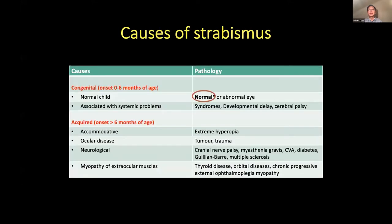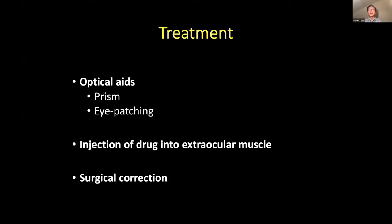The causes of strabismus can be divided into congenital — occurring in the first six months of age — and acquired — occurring after six months. In the majority of cases, the eye itself is normal. Treatment options include optical aids, prisms for small-angle strabismus, and patching of the eye to improve amblyopia, though none of these correct the strabismus itself.